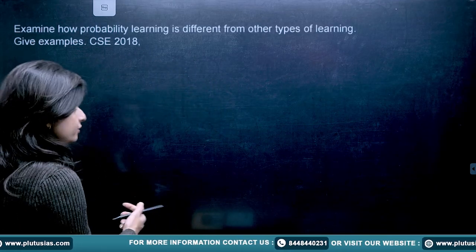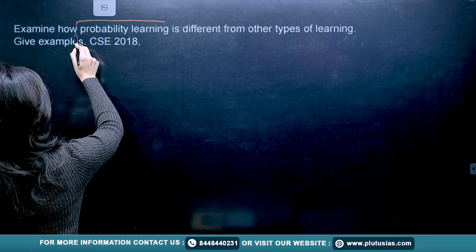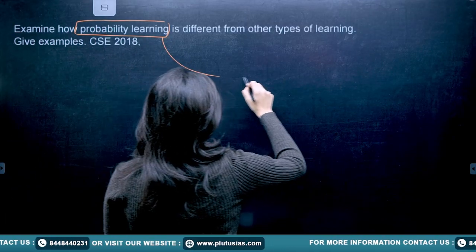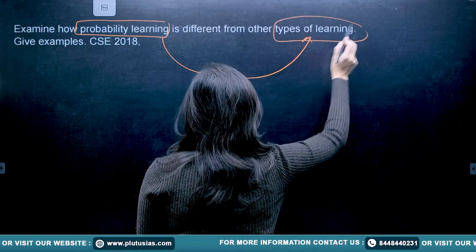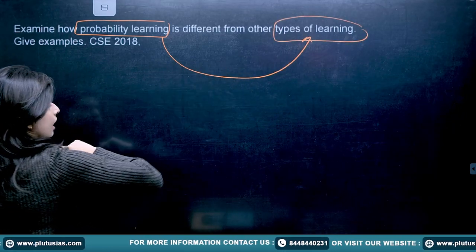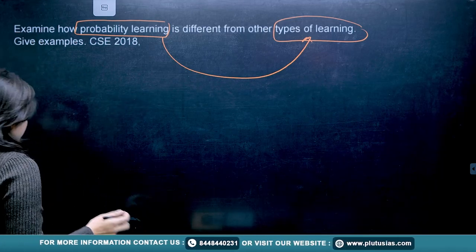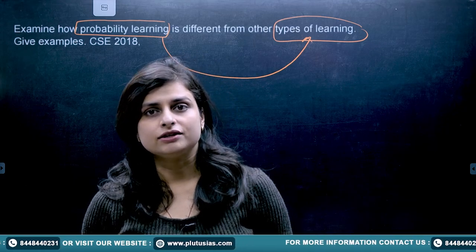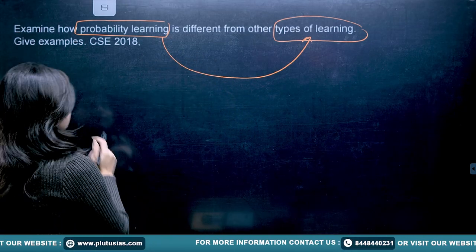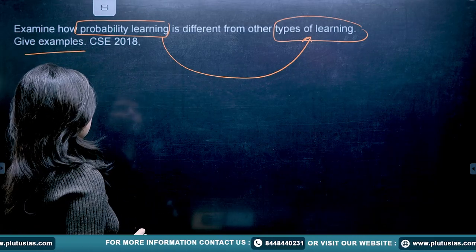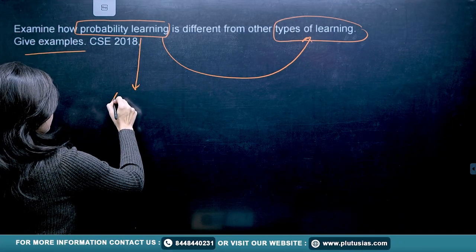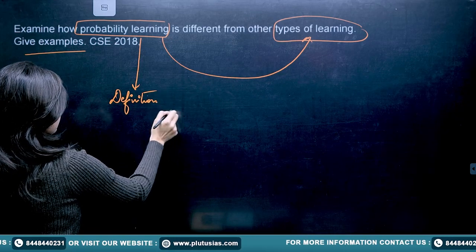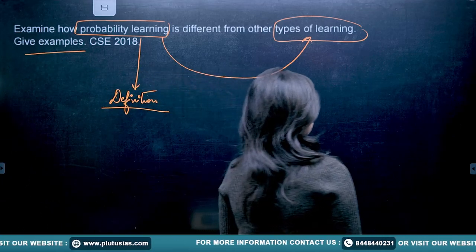This question was there in 2018, and what you need to focus on is what the question is actually demanding. They are talking about probability learning, and then they ask how it is different from other types of learning. They didn't ask you to only write the theory — you have to explain with examples as well, to show whether you have understood the application part or not.